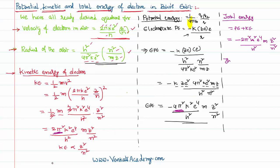If we write the ratio of these energies — potential energy, kinetic energy, and total energy — potential energy has −4π², kinetic energy has +2π², and total energy has −2π², with all other terms cancelling. So the ratio of potential energy to kinetic energy to total energy is −2 : 1 : −1.